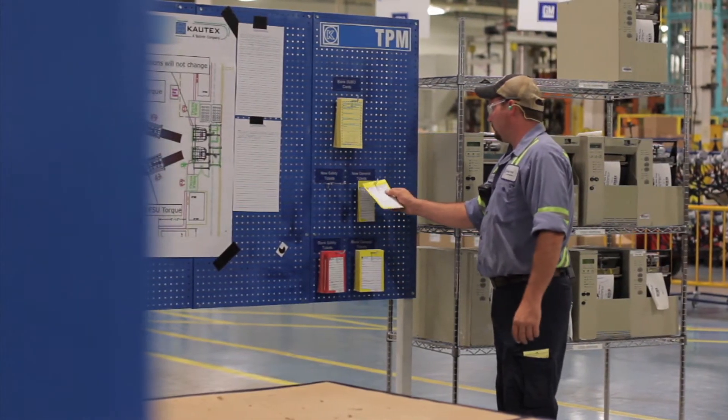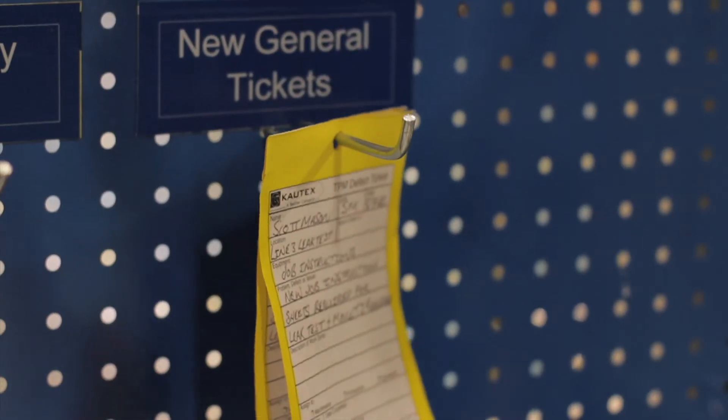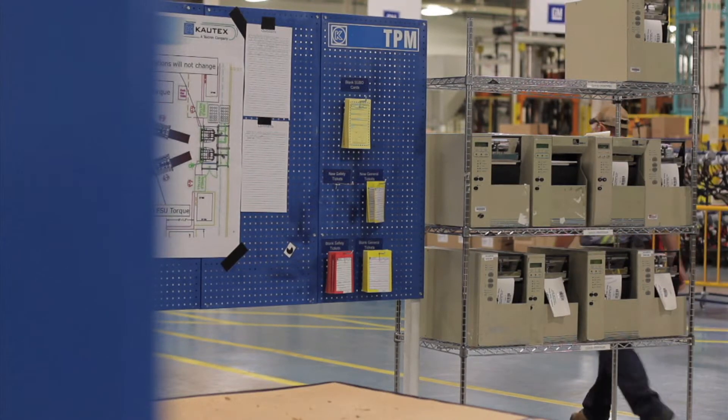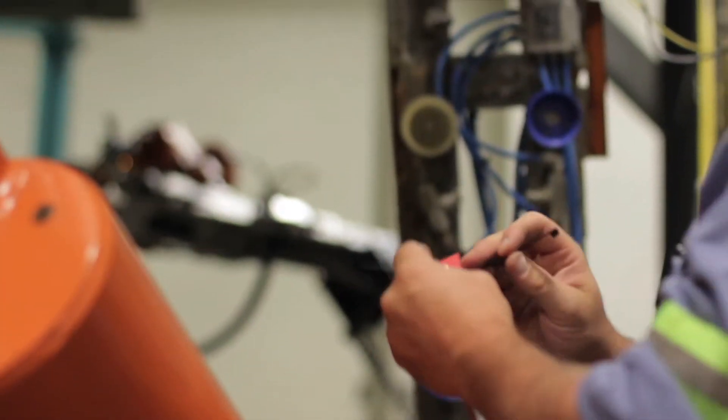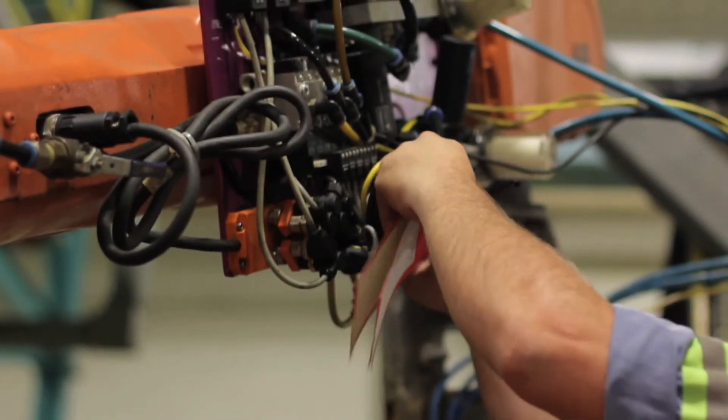This board is used to organize the maintenance work orders so we can be assured that someone is scheduled to come and fix it. Red tickets are for safety items, so the system prioritizes the urgency related to a safety factor.